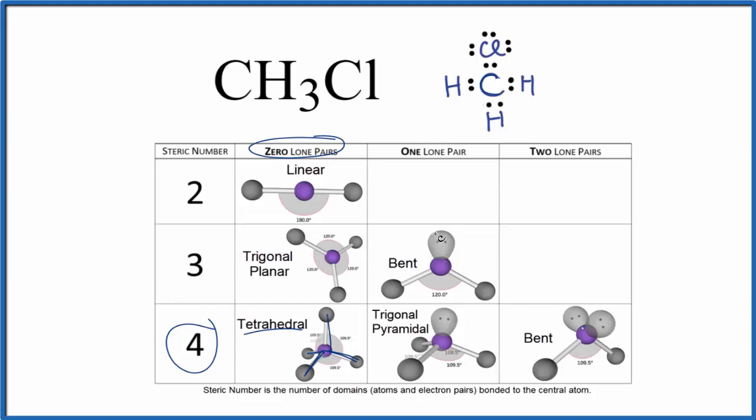We can also use the AXE notation to figure out the molecular geometry for CH3Cl. A, that's the central atom, the carbon there. X, that's the number of atoms bonded to the carbon. We have one, two, three, four atoms. And then E, that's the number of lone pairs on that carbon. But there aren't any lone pairs. All of these electrons, they're involved in chemical bonds. So E would be zero, and often we just don't write that. If you look up AX4 on a table of molecular geometries, you'll find out it is tetrahedral, just like we found before.